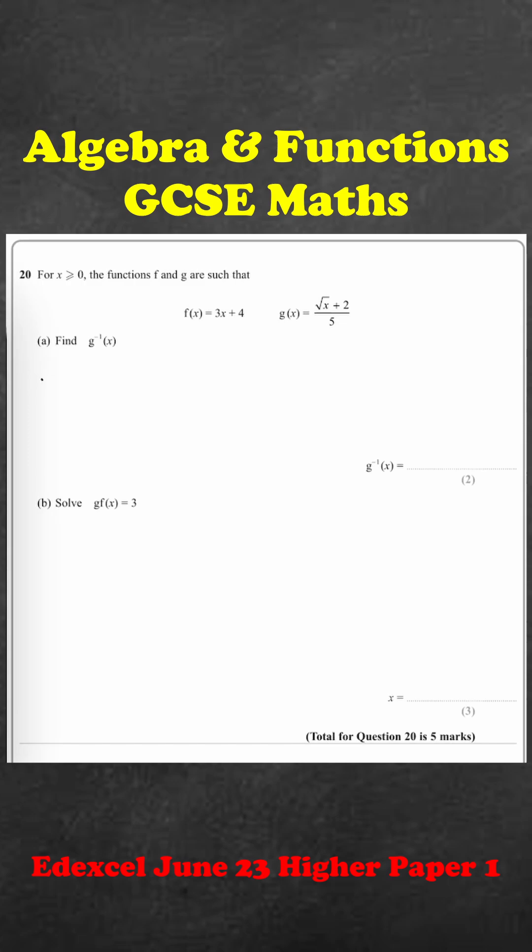I'm going to rewrite the g function as x equals the square root of g⁻¹(x) plus 2, over 5.